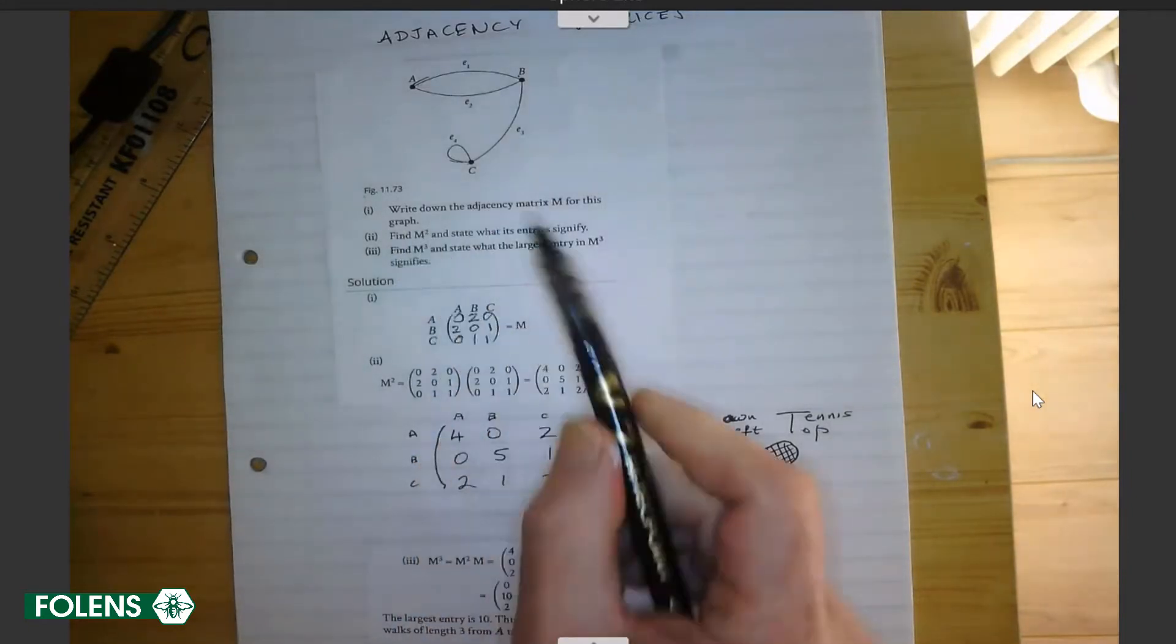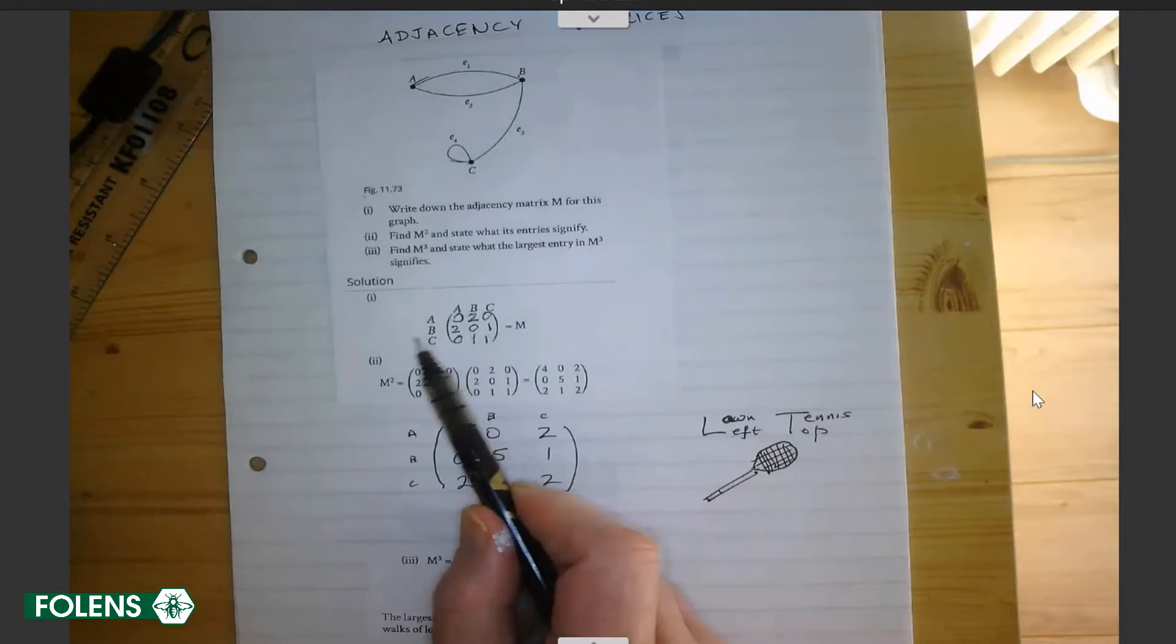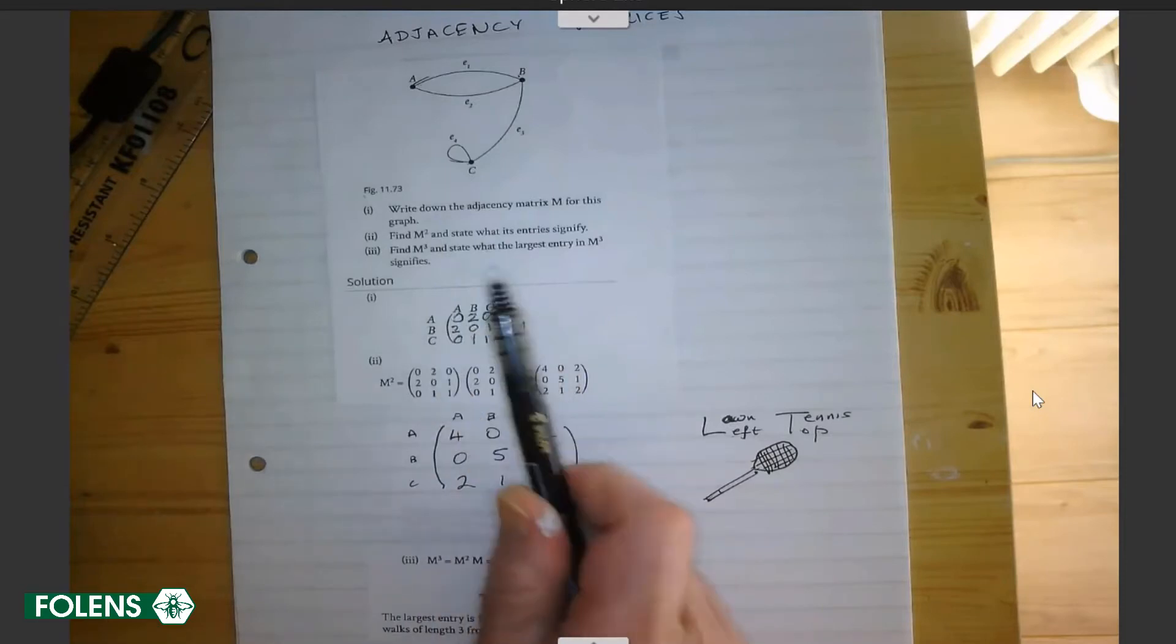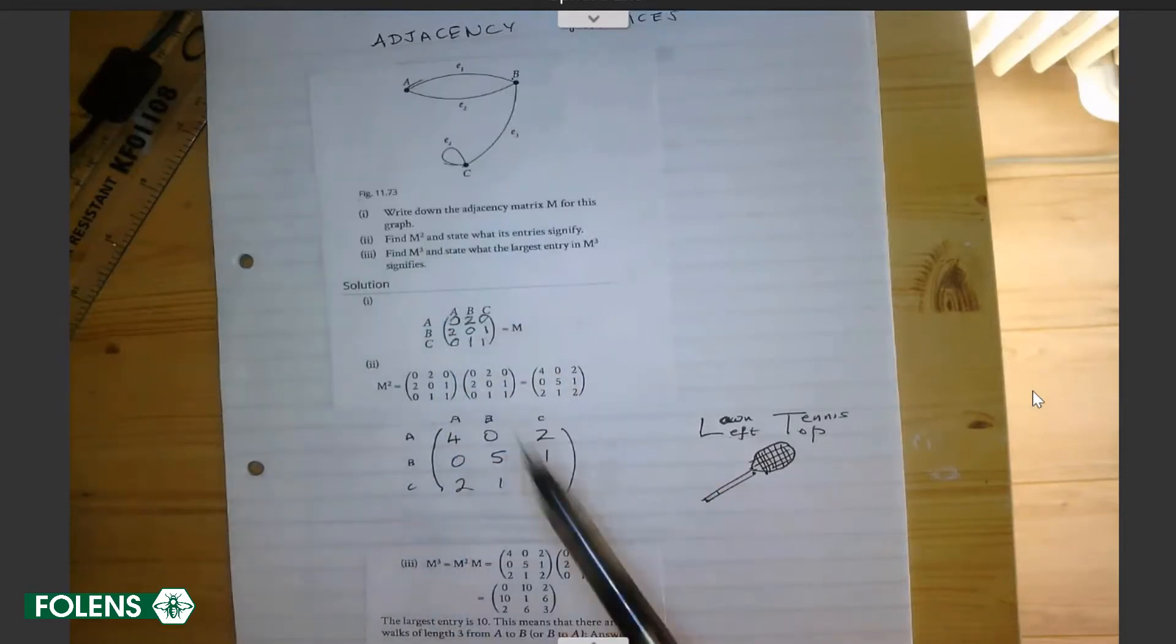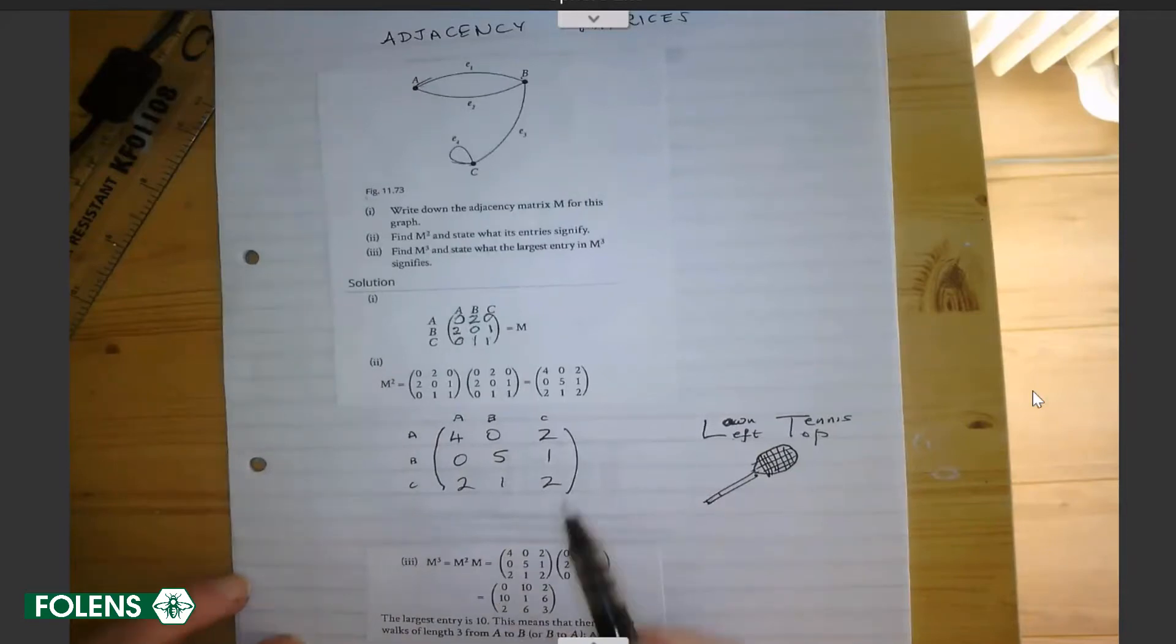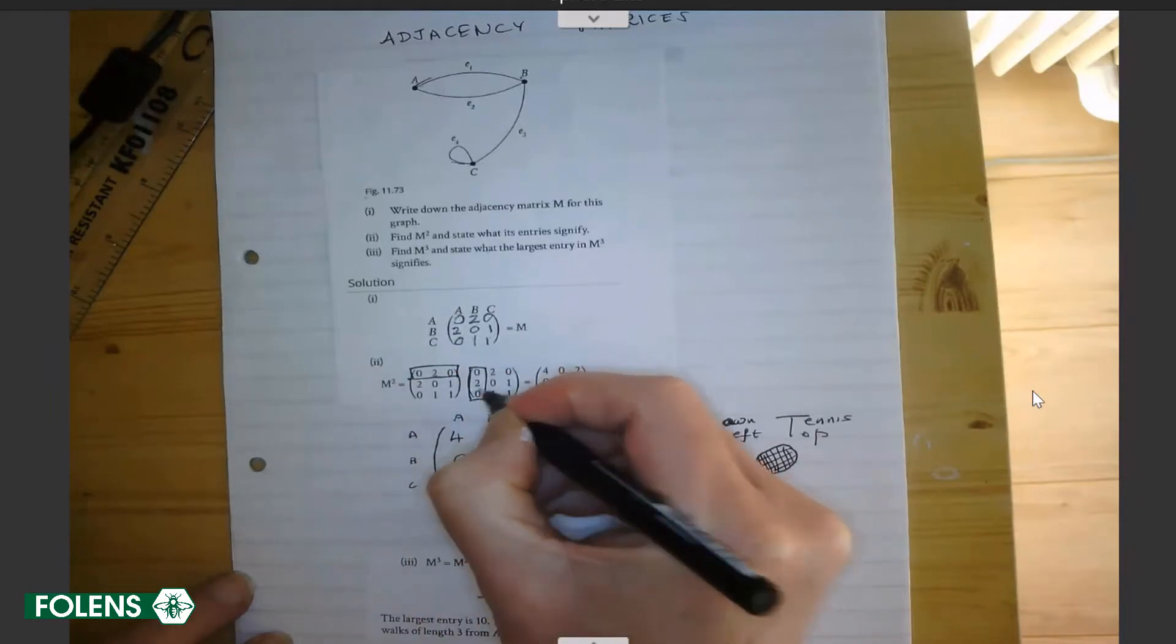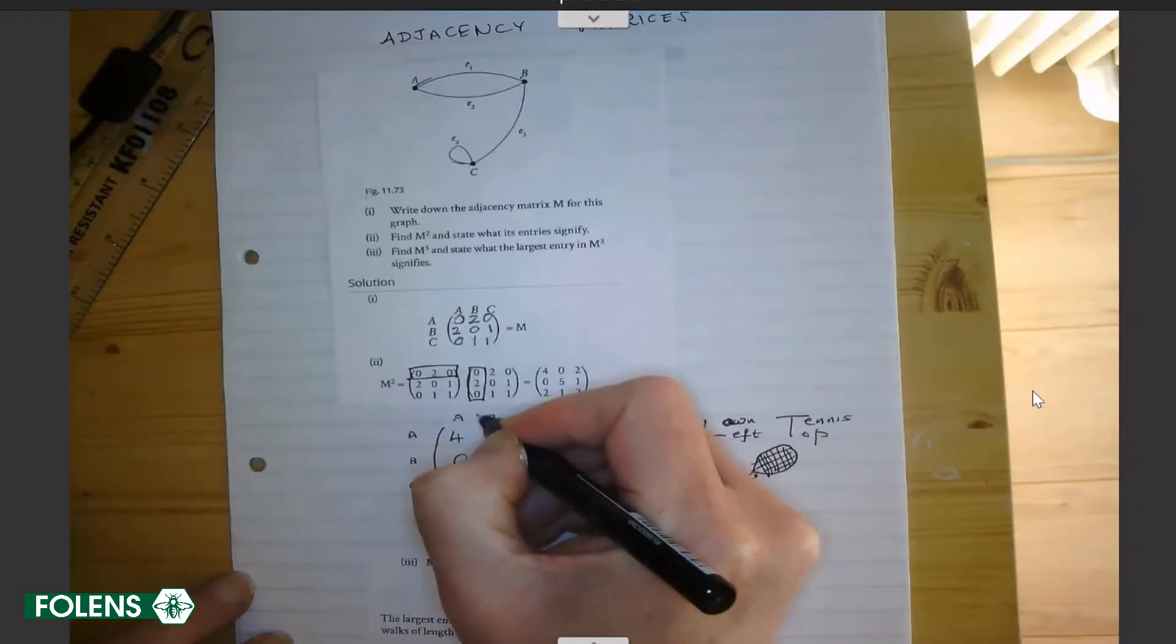Now, find M squared. That is a matrix that represents the number of paths, the number of arcs that lead from A to B to C, B to all the others, and so on. If we get M squared, which is we multiply M by M, the method of matrix multiplication has to be taught here because it is no longer on the math score. It is what we call a diving board system.